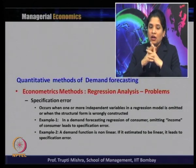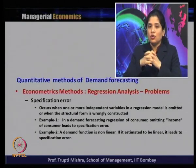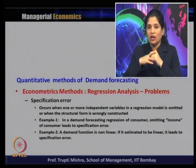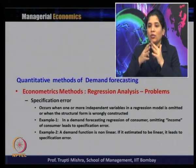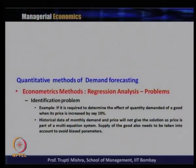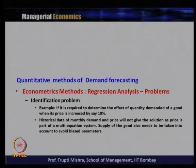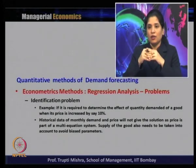The fourth problem is specification error — it occurs when one or more independent variables are omitted or the structural form is wrongly constructed. For example, omitting consumer income in a demand forecasting regression leads to specification error, or estimating a non-linear demand function as linear causes specification error. The fifth problem is identification — for instance, historical monthly data on price and quantity demanded cannot identify the demand curve alone since price is part of a multi-equation system, and supply must also be accounted for to avoid biased parameters.